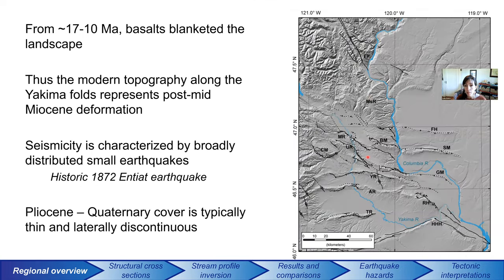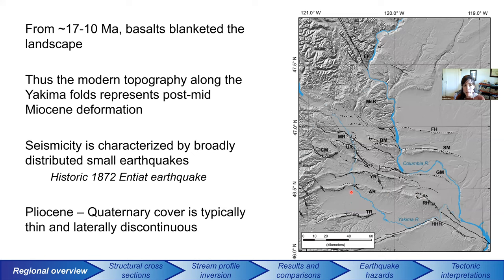Here's a blow-up of that area showing the Yakima Folds — these beautiful east-west structures which you can see quite clearly in the topography. Before these faults started creating this topography, quite a bit of basalt was erupted during the Columbia River flood basalt period across this landscape. It blanketed and filled in a lot of the paleo topography, giving the region a very low-relief surface — a tabula rasa — about 17 to 10 million years ago. That means a lot of the modern topography along the Yakima Folds represents post-Miocene deformation.